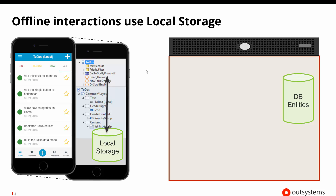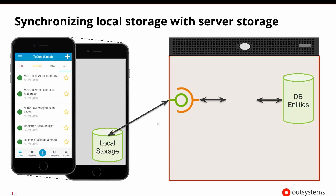When we think about offline interactions, they use local storage. Things can happen on the device — the device may need to retrieve, update, and store lots of information inside local storage. At some point, it needs to synchronize with the server. That synchronization could be kicked off automatically or triggered manually. Certain sets of information from local storage are sent to the server, and then the server looks at any new information it might have and sends that back.